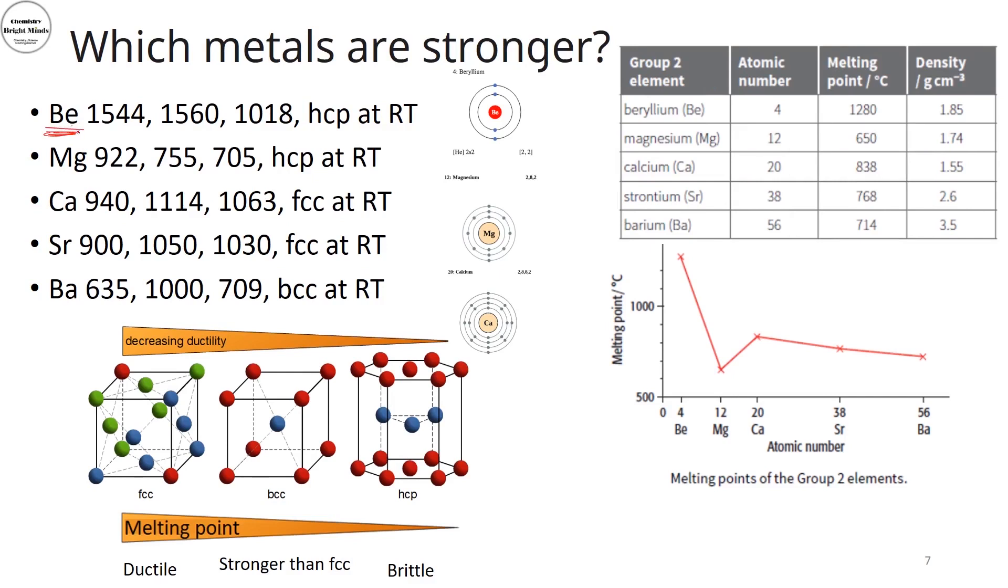Now, if I move to the crystal lattice of beryllium, you could see that it is a hexagonal closed pack at room temperature. Also, magnesium is the hexagonal closed pack, where in the case of calcium, you have a face-centered cubic.